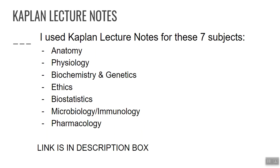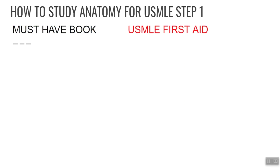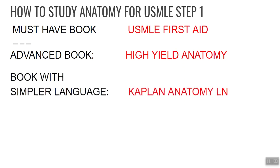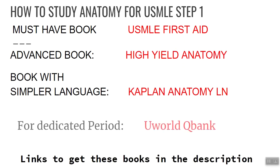To summarize how to study anatomy for Step 1: the book you must have is USMLE First Aid; the advanced book to maximize your score is High Yield Anatomy; and for people who want a book with simpler language, Kaplan's anatomy lecture notes. Links to official stores are in the description. Finally, in your dedicated period, you need to start UWorld for anatomy.